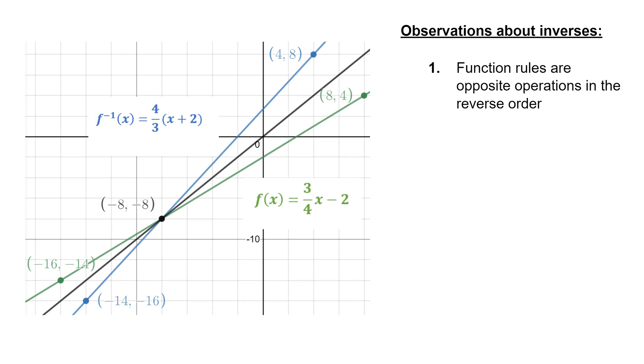So the inverse of that would be to add and then divide. Well, hold on a second, you might say, this inverse function doesn't look like it's adding and dividing. Well, remember, I could rewrite that inverse function as x plus 2 divided by 3 fourths. And that makes it much more clear that we are adding and then dividing opposite operations in the reverse order.